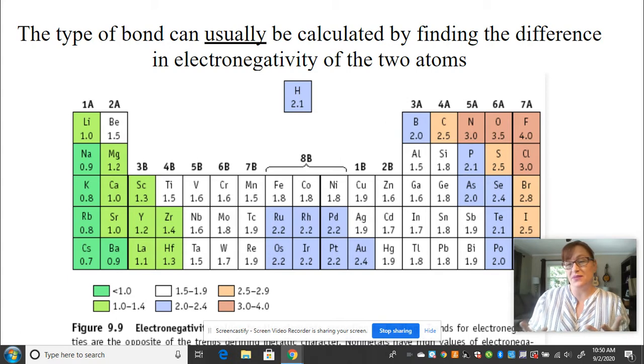So if you have two atoms that are pretty similar, like two non-metals in their strength of electronegativity, then they're not going to be able to pull electrons off of another non-metal. Instead they will share.